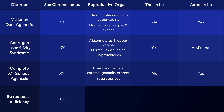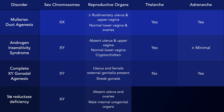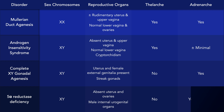With 5-alpha reductase deficiency, the person's karyotype is also 46XY. They develop male internal urogenital organs without a uterus or ovaries, and external genitalia at birth may be either female or ambiguous. Thelarche does not occur, but adrenarche does.